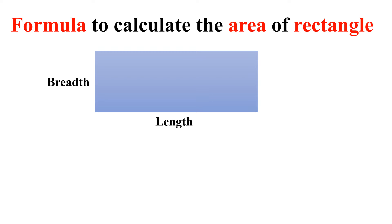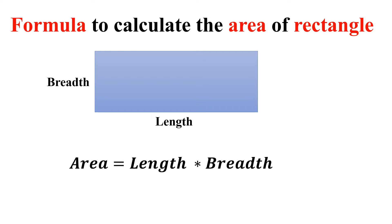Once we understand the breadth and length of the rectangle, the next task is to find the area of the rectangle. The area of any rectangle is equal to length multiplied by breadth. So once we understand the formula, we shall now consider a Python code to get the area of a rectangle.